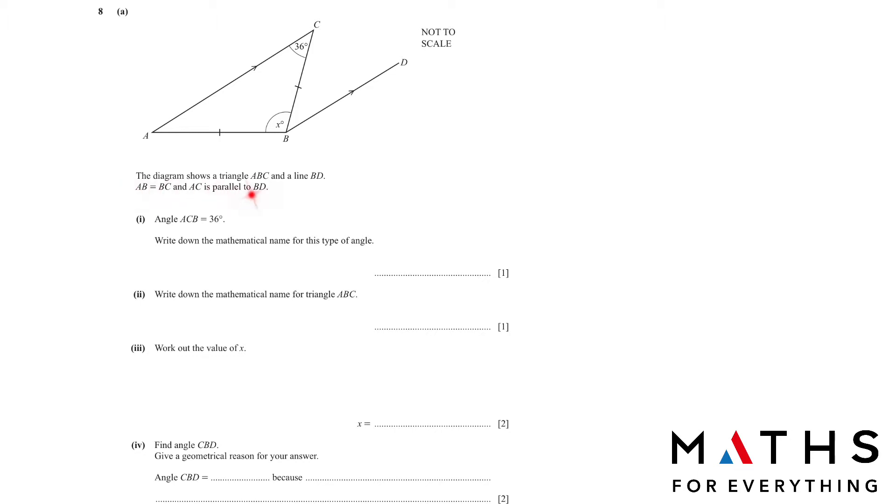The diagram shows a triangle ABC and a line BD. AB is equal to BC. AC is parallel to BD. Angle ACB is 36 degrees. Write down the mathematical name for this type of angle. It is less than 90, so it's an acute angle.